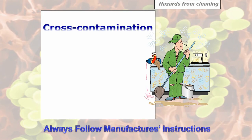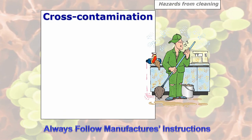Now let's have a look at the hazards from cleaning. You get cross contamination — for example, you might be using the same cloth in a dirty area as a clean area. A question that sometimes comes up: if you're cleaning an area and using the same cloth, which would you clean first, the high risk or the raw food area? You'd clean the high risk area first, then the raw food.